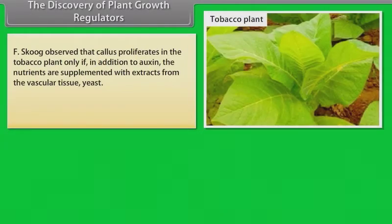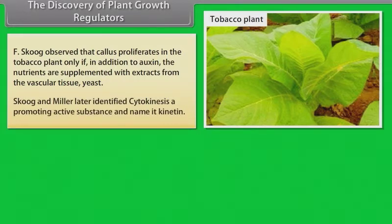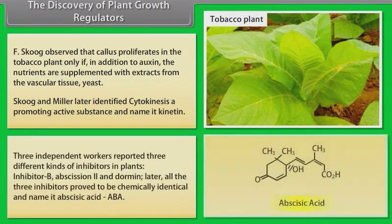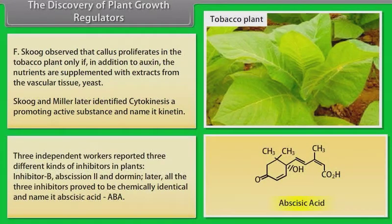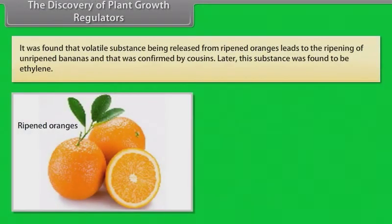The discovery of plant growth regulators continued. F. Skoog observed that callus proliferates in the tobacco plant only if, in addition to auxin, the nutrients are supplemented with extracts from the vascular tissue or yeast. Skoog and Miller later identified cytokinesis promoting active substance and named it kinetin. Three independent workers reported three different kinds of inhibitors in plants: inhibitor B, abscission-2, and dormin. Later, all the three inhibitors proved to be chemically identical and named it abscisic acid, ABA. It was found that volatile substance being released from ripened oranges leads to the ripening of unripened bananas and that was confirmed by Cousins. Later, this substance was found to be ethylene.